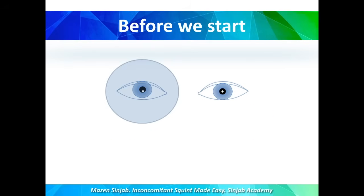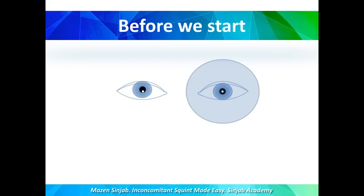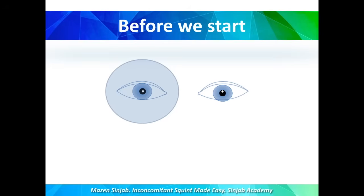We have to use the alternate cover test in order to determine the eye with the hypertropia, because we are going to use the eye with the hypertropia as a reference in all our steps. For example, the cover is now in front of the right eye, which has hypertropia. I move the cover to in front of the left eye and observe the movement of the right eye. If the right eye moves downwards, it means there is right eye hypertropia. Then I move the cover back in front of the right eye and monitor the movement of the left eye. If the left eye moves up, it means there is left eye hypertropia.